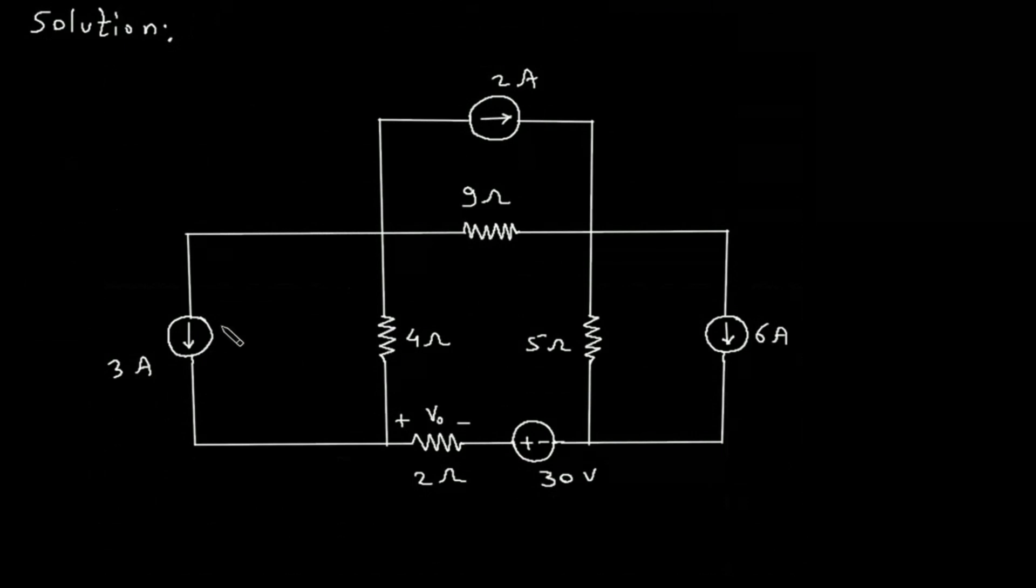Now we will convert this current source into its equivalent voltage source. Also, we will convert this current source into its equivalent voltage source, and this current source into its equivalent voltage source. Then this will be a loop. Then we will apply KVL and we will find the value of VO.